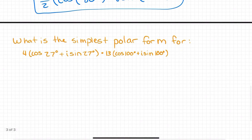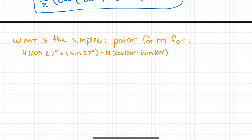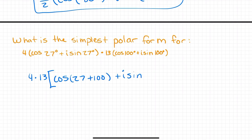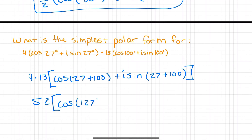Let's move on to another example. What is the simplest polar form for 4(cosine 27 + i sine 27) times 13(cosine 100 + i sine 100)? Easy peasy — we get 4 times 13, times cosine (27 plus 100), plus i sine (27 plus 100). Simplifying: 13 times 4 is 52, and 27 plus 100 is 127 degrees. So the answer is 52 times cosine 127 degrees plus i sine 127 degrees.